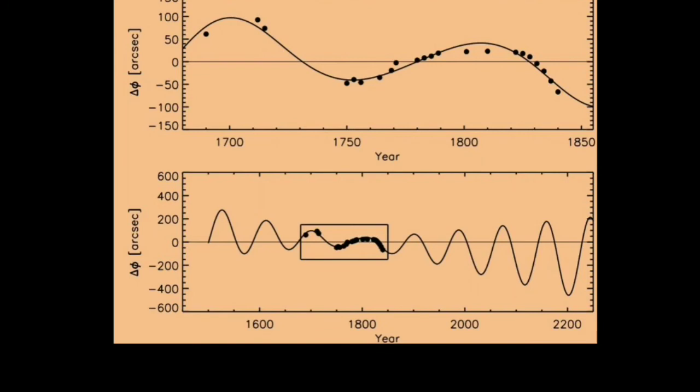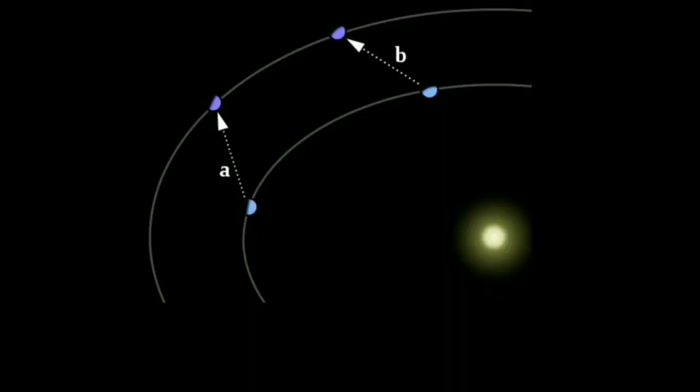Was Newton's universal law ineffective there? Well, not really. Two mathematicians, Urban Le Verrier and John Couch Adams gave a prediction. There was another planet nearby Uranus disturbing its path, pulling it towards itself.